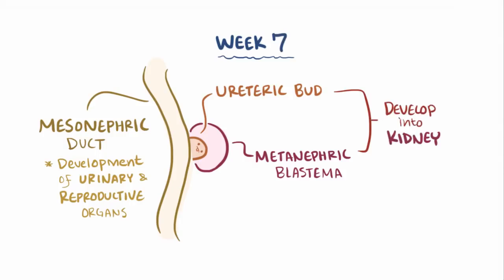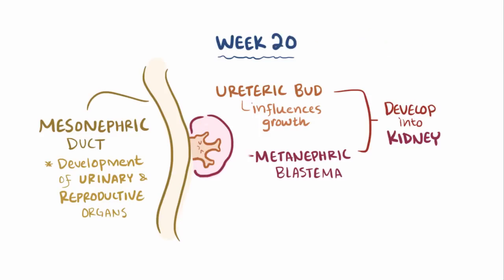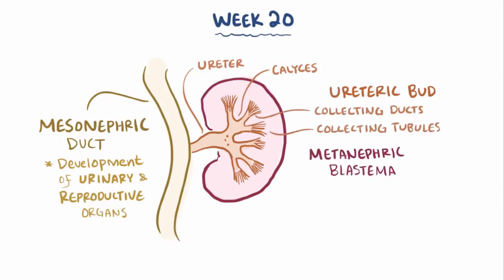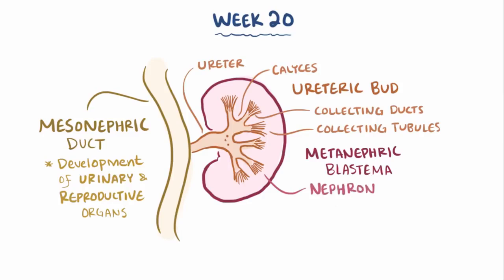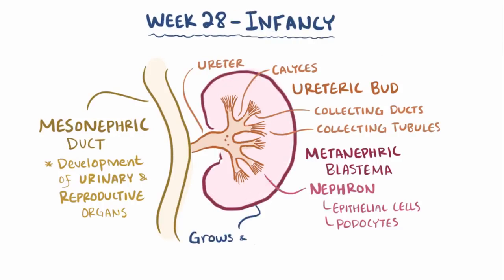At about the seventh week, nephrogenesis, or formation of the kidneys, starts under the influence of the ureteric bud. By about 20 weeks, the ureteric bud has formed the ureters, the renal calyces, collecting ducts, and collecting tubules, while the metanephric blastema develops into the nephron itself, which includes the epithelial cells and the podocytes of the Bowman's capsule.